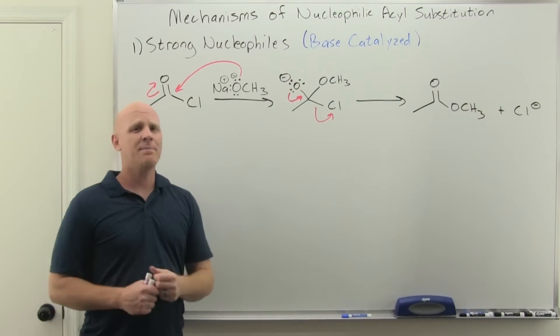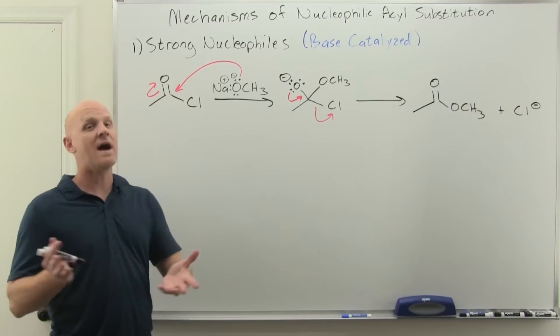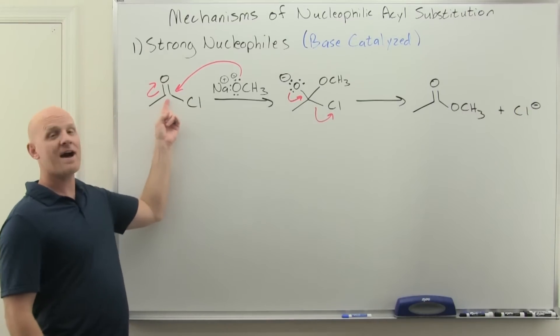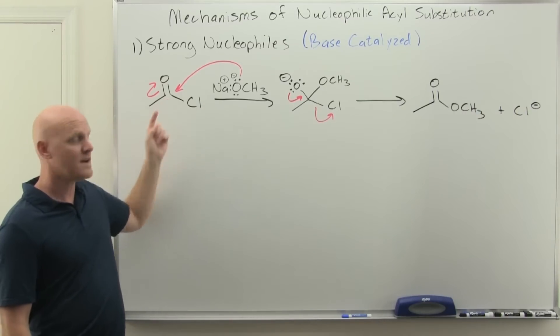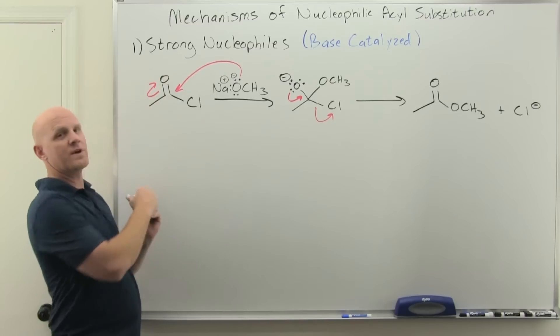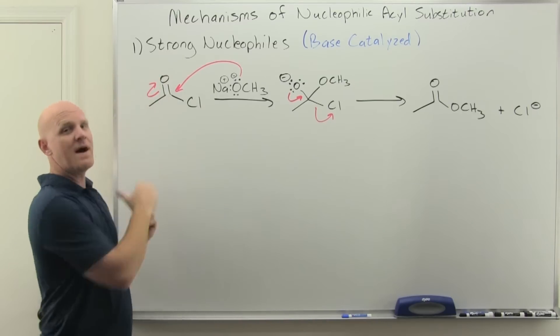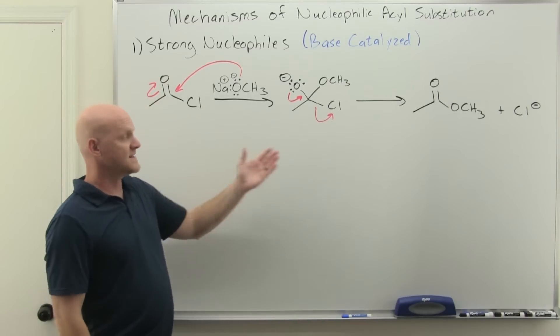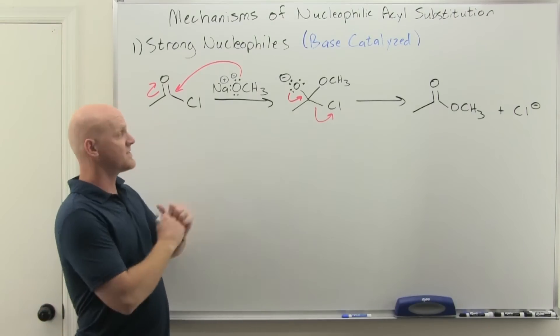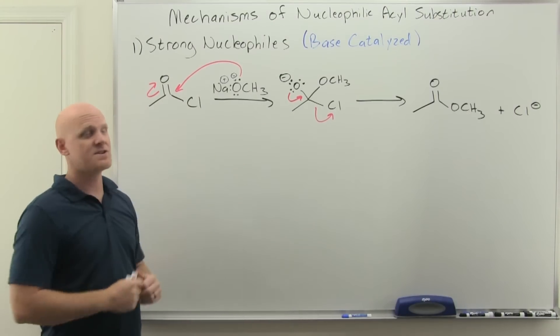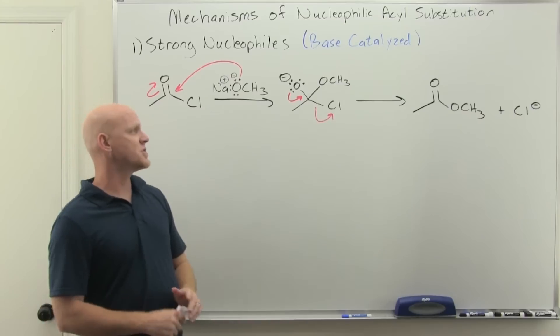Now you might be like, well Chad, why does this happen in two steps like this? Why can't we just do backside attack? Well, we know we don't do backside attack on sp2 carbons. With this thing being trigonal planar, we can attack the front face or the back face. So in this case, when we study the kinetics, it turns out to be two steps just like we propose and show right here.